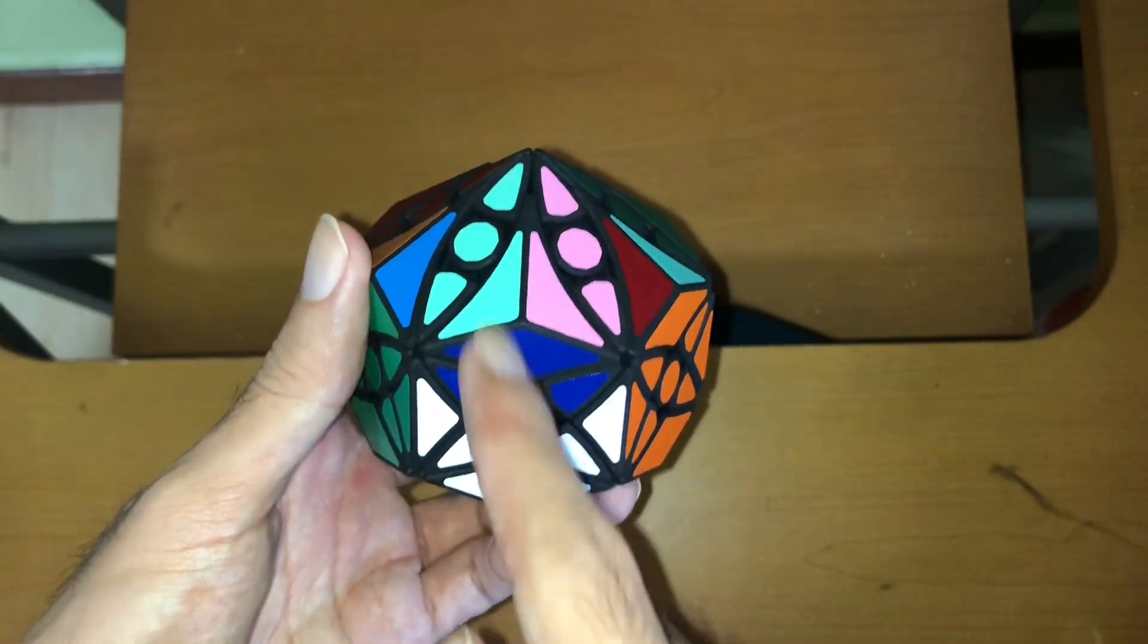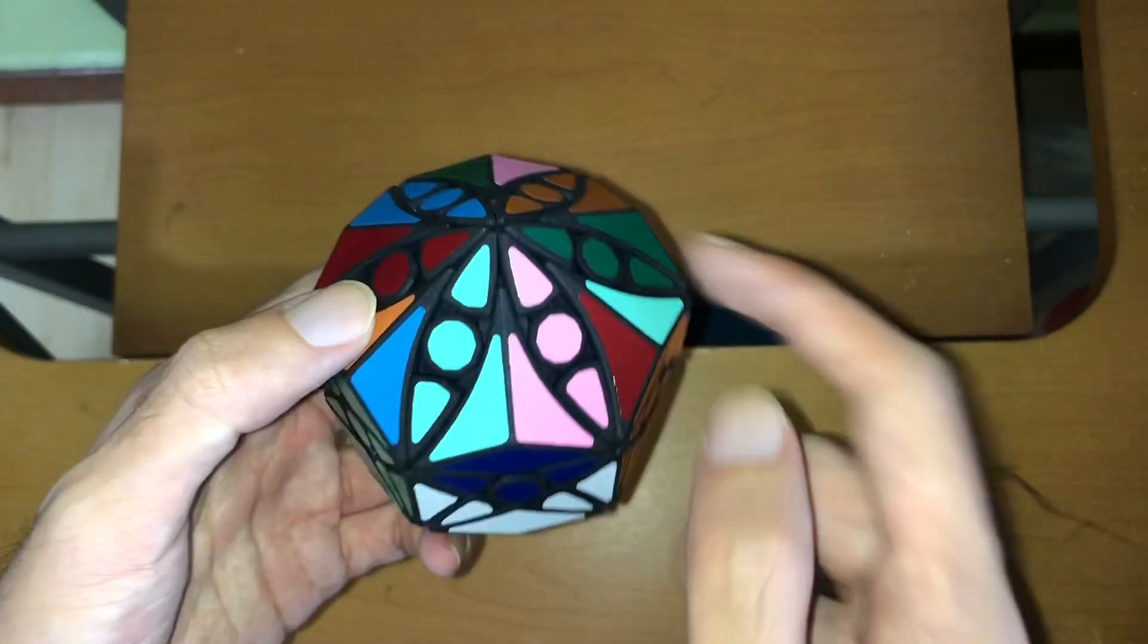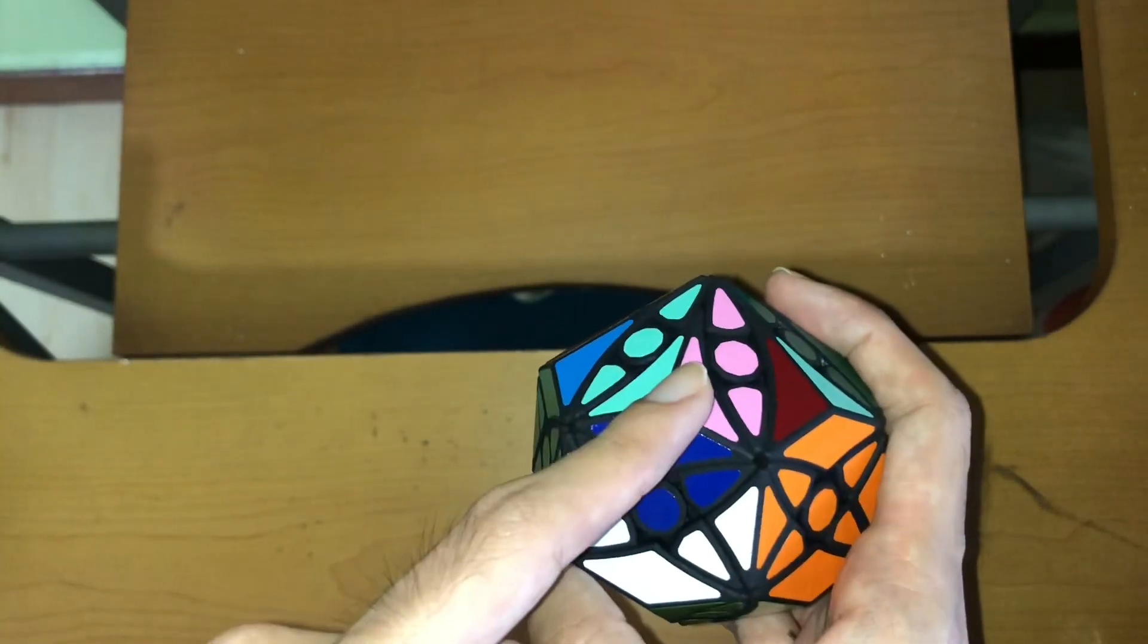Also these big pieces are now scrambled. So I think these jumbling moves are the only way to scramble these groups of pieces.